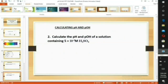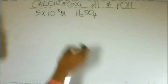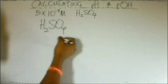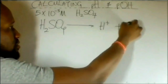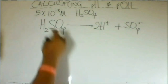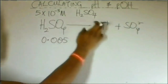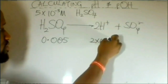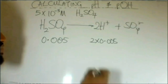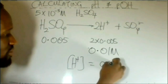Example 2: Calculate the pH and pOH of a solution containing 5 times 10 to the power of minus 3 molar sulfuric acid. Question 2 gave us 5×10⁻³ molar sulfuric acid. According to Arrhenius' concept, if a substance dissolves in water, it splits into ions: H₂SO₄ dissociates into 2H⁺ and SO₄²⁻. The concentration of H₂SO₄ is 5×10⁻³, which is 0.005. Since the ratio is 1:2, the hydrogen ion concentration will be 2 times 0.005, giving us 0.01 molar. Therefore, our H⁺ ion concentration is 0.01 molar.